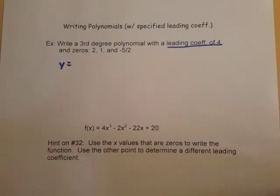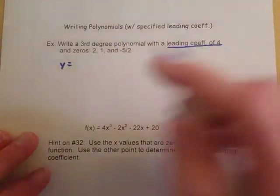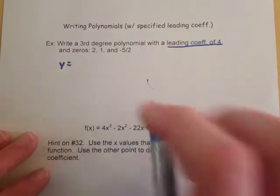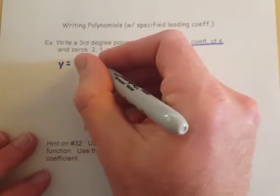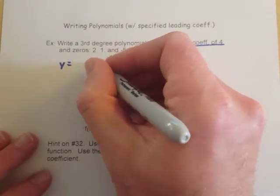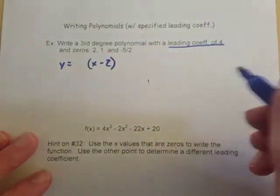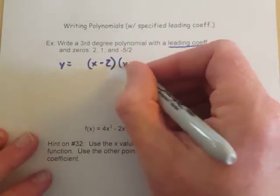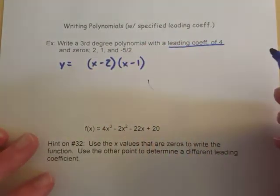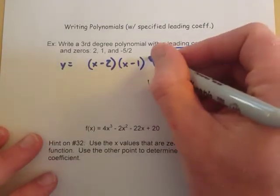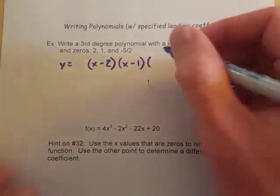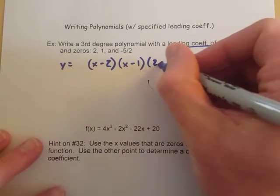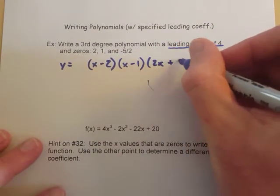I'm going to take this x minus the 2, the 1, and the negative five halves and I'm going to set up zeros. So with the 2 that's going to be x minus 2, with the 1 it's going to be x minus 1, and with negative five halves it's going to be 2x plus 5 as our factor from that one.